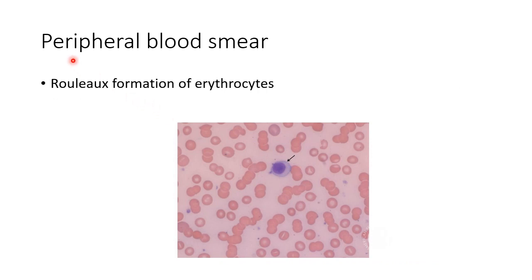Now let us see about the peripheral blood smear findings in multiple myeloma. There will be rouleaux formation of erythrocytes in peripheral blood smear. This picture shows the rouleaux formation of erythrocytes in peripheral blood smear in multiple myeloma.